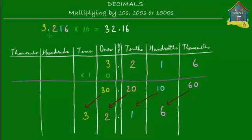As you can see, you have the same digits 3216 in both the original number and the answer. The only thing that changed is the decimal point — it moved one place to the right. That's the simple trick: when multiplying any decimal number by 10, just move the decimal point one place to the right — one place because there is one zero in 10.